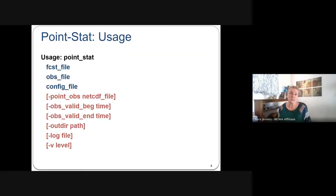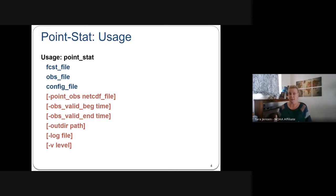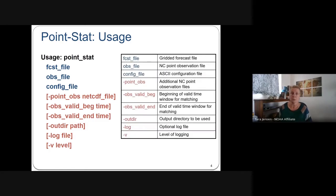Here's what the usage looks like, similar to how you call GridStat. You pass in a forecast file, an OBS file, and a configuration file. You can add additional files with point observations, chaining together several observation sources into the same run. On the command line you can manage the beginning and ending valid time for observations, specify the output directory, log files, and verbosity level.